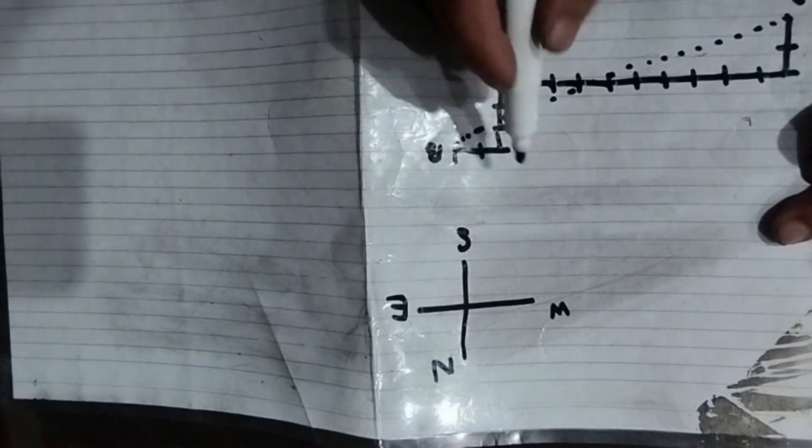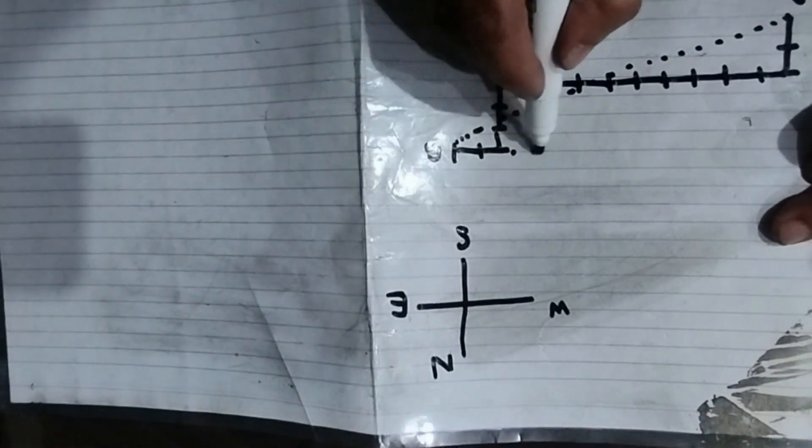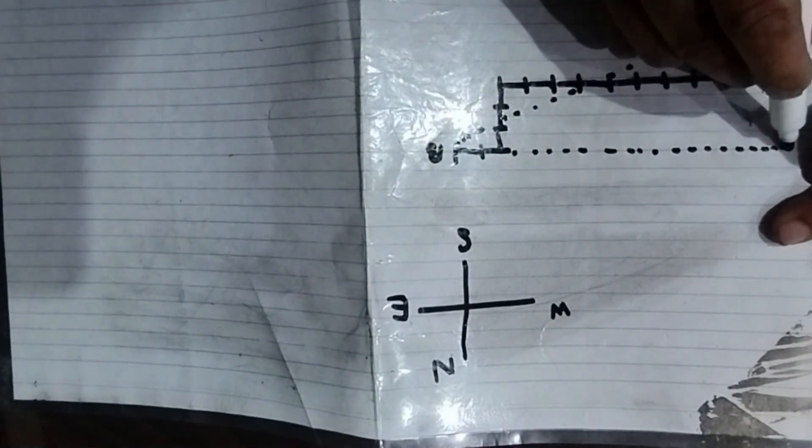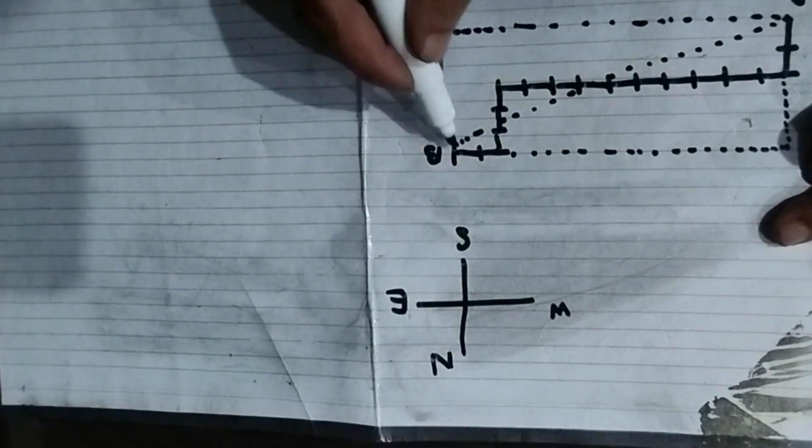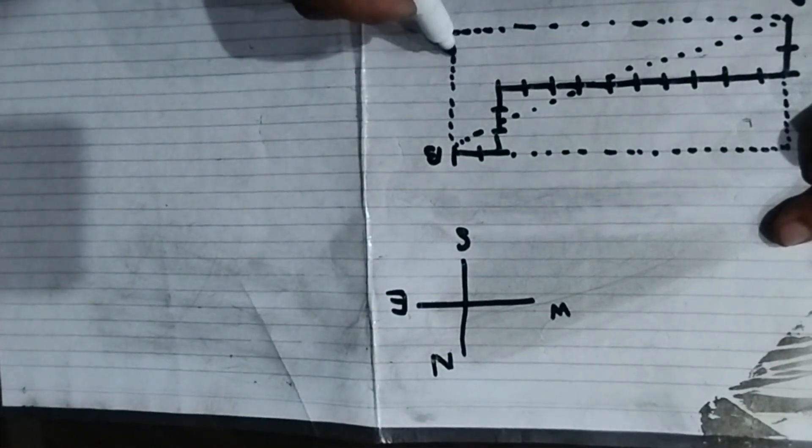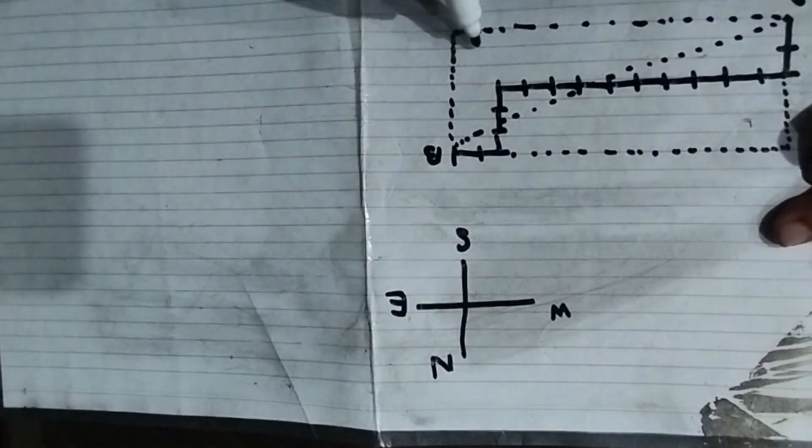And then we extend this line up till here and extend this line up till here. Then move this line up till here and make this line here. These are straight lines. So here the angle will be 90 degrees.